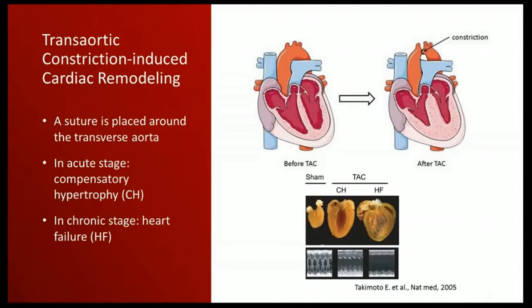Transaortic constriction implies an induction of aortic narrowing at the transverse aorta between the left and the right carotid artery. This creates a back pressure exerting on the left ventricle, which leads to cardiac remodeling. Cardiac remodeling occurs in two stages: compensated hypertrophy, occurring during the acute phase after induction, in which the heart increases in size but function is maintained.